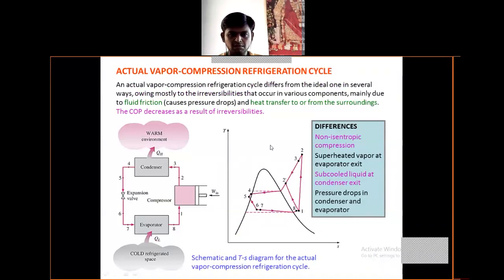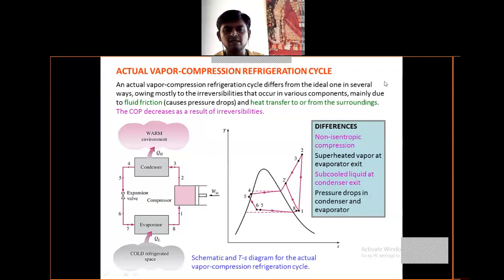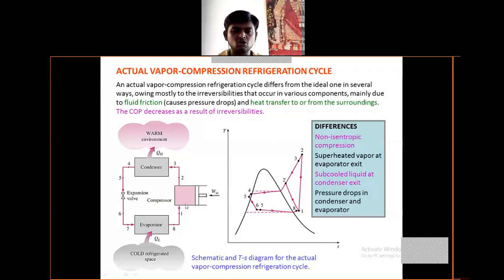The actual vapor compression refrigeration cycle differs from the ideal one in several ways, owing mostly to the irreversibility that occurs in various components, mainly due to fluid friction and heat transfer to or from the surroundings. The COP decreases as a result of these irreversibilities.